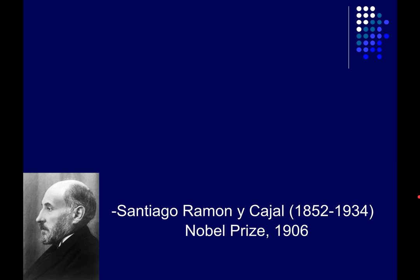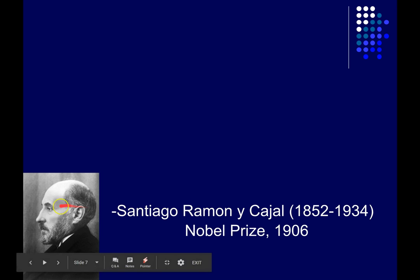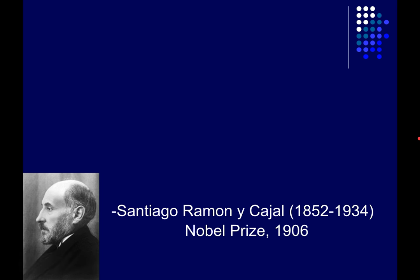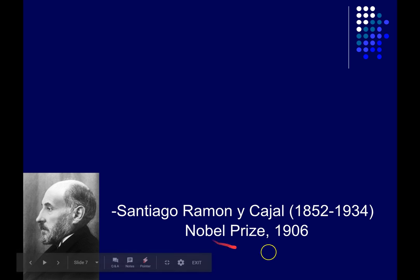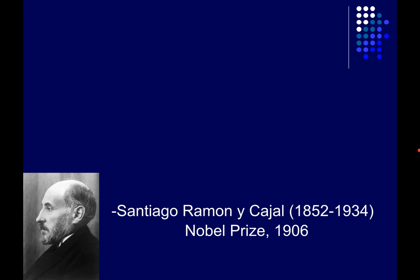The first insights we gained into the microscopic structure of the brain came largely from Santiago Ramón y Cajal. He was a Spanish histologist — someone who uses careful staining and dissection techniques to look at tissues under a microscope. He won the Nobel Prize in 1906 for his contributions to understanding the microscopic structure of the brain.